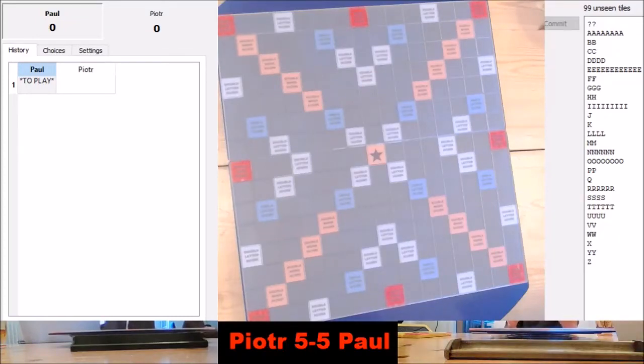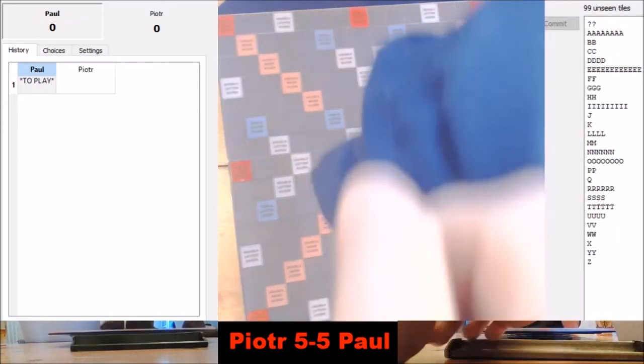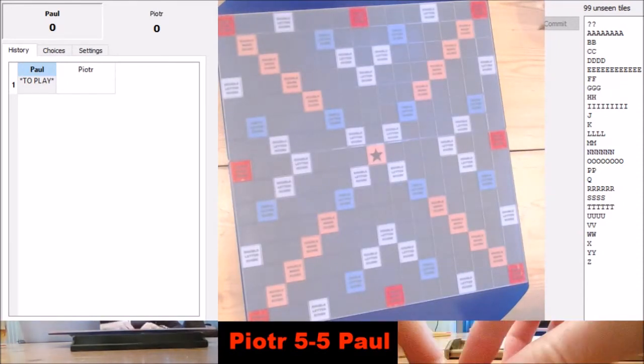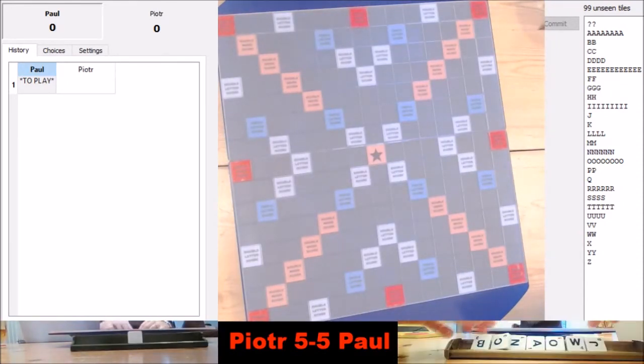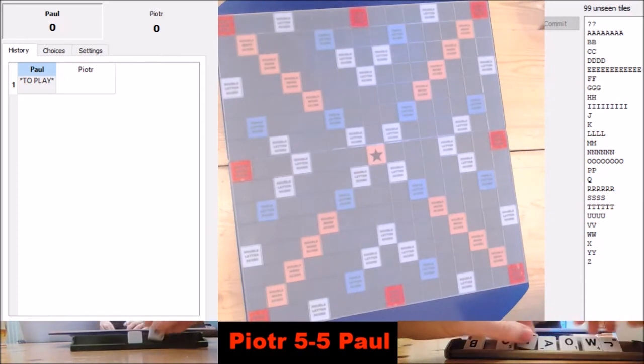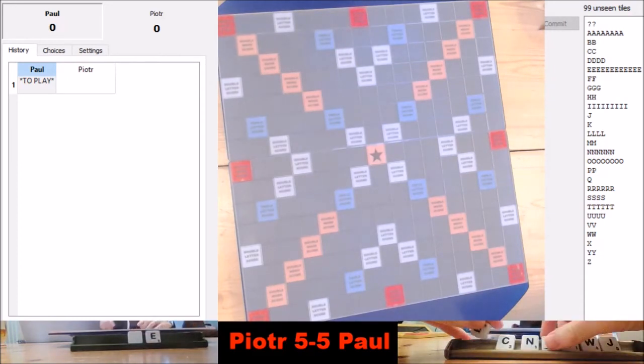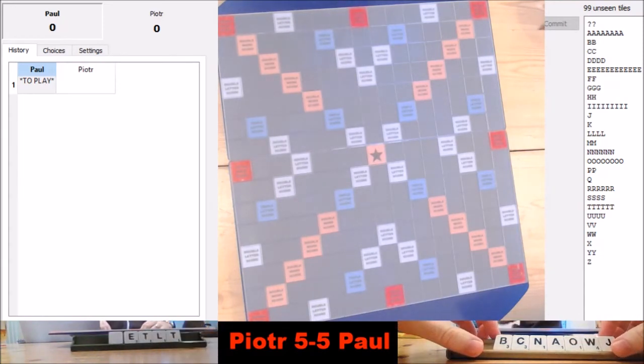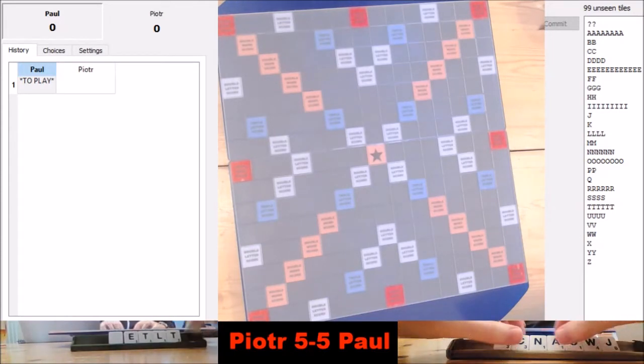It is Paul to start the first game of the day. Let's see if he can keep his win streak alive. This is where in the semi-final, Piotr went on to win five games in a row to crush David Webb and get to the final.